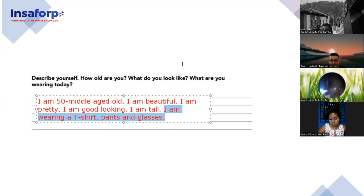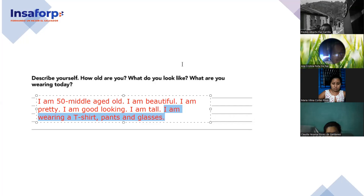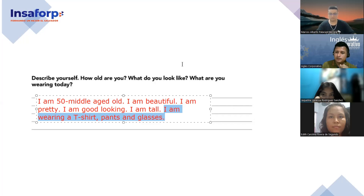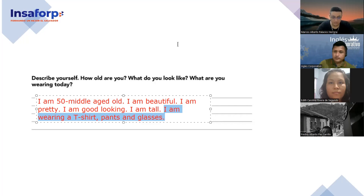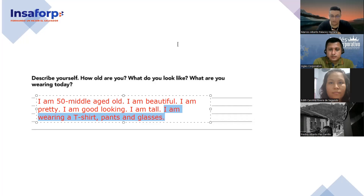My suggestion is to practice at home — describe yourself, describe your wife, your husband, your mother, your father, your daughter. Use these adjectives to describe people. Marcos, go ahead. 'Hello, good evening. My name is Marcos Palacios. I am middle-aged, 22 years old. I am good looking, I'm pretty tall. I have black straight hair. I am wearing a T-shirt, glasses, jeans, and boots.' Thank you — just one note about 'middle-aged.'